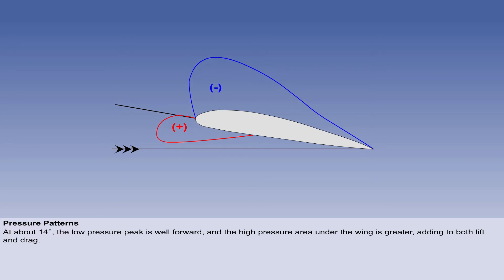At about 14 degrees, the low pressure peak is well forward, and the high pressure area under the wing is greater, adding to both lift and drag.